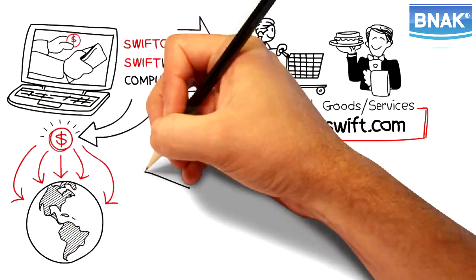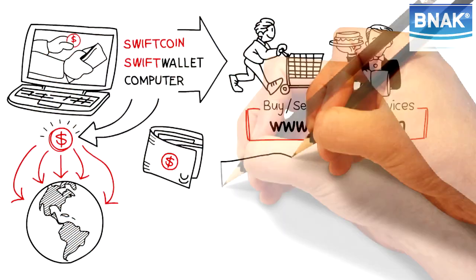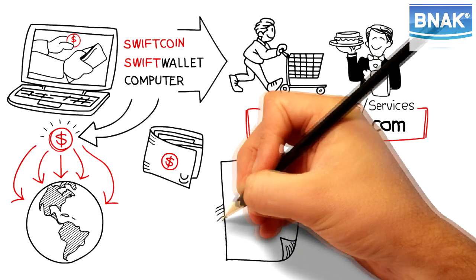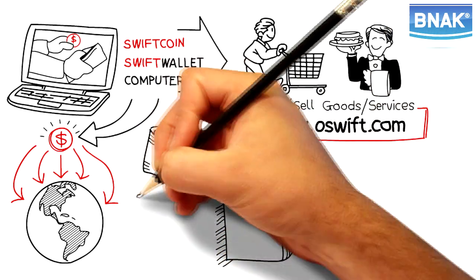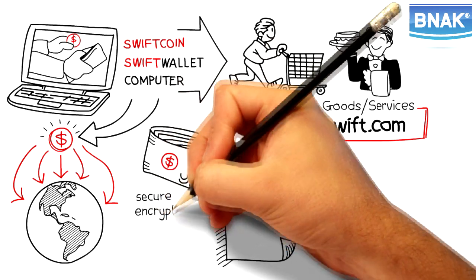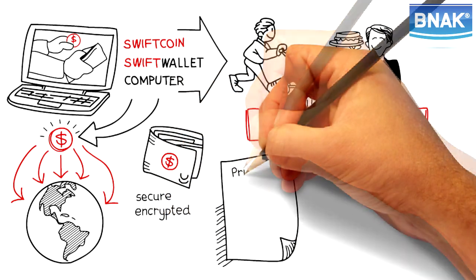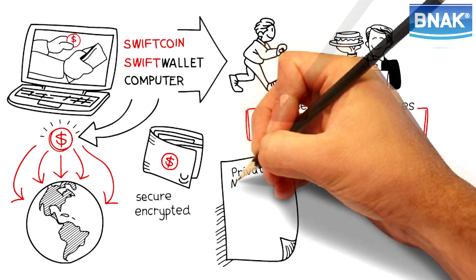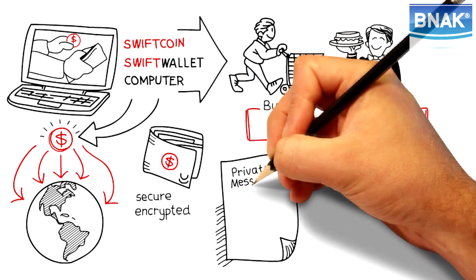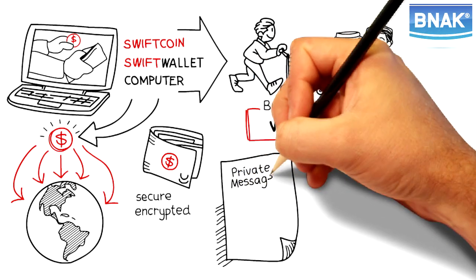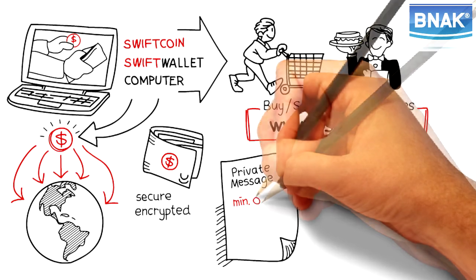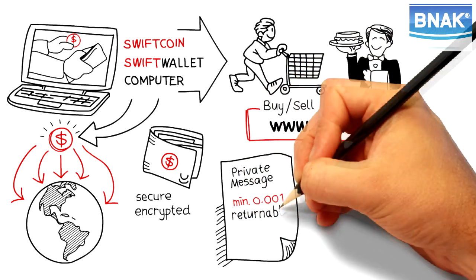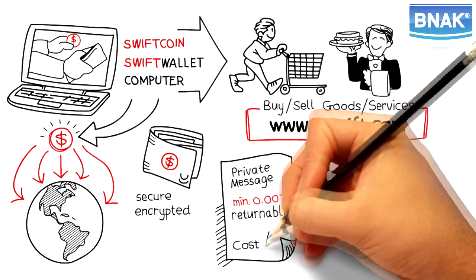A SwiftCoin wallet is all that is needed to receive SwiftCoin. What else can I use my Swift wallet for? You can use your Swift wallet for secure, encrypted, private text communications that cannot be intercepted or stored outside your device. A written message can be sent inside one SwiftCoin wallet to any other along with a minimum transaction of 0.001 SwiftCoin, which can be returned to you in the reply message. Your net cost is zero.